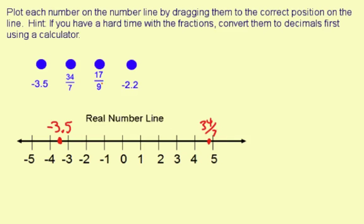The next one is 17 ninths. I'll use the same kind of mental math. 9 times 2 is 18, so 18 ninths is 2. 17 ninths is just less than that, so it's just less than 2. I'm going to put 17 ninths right there.